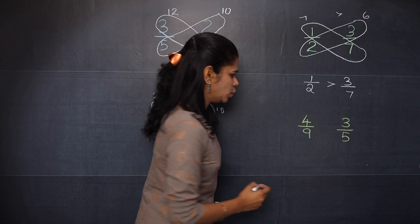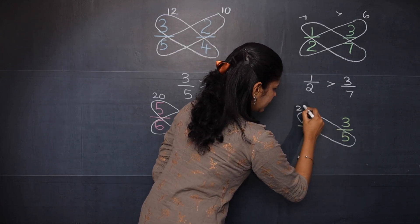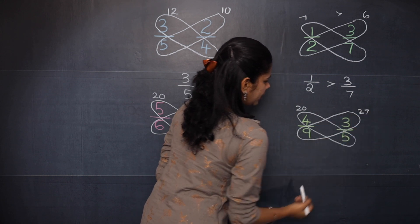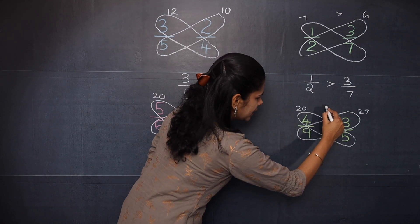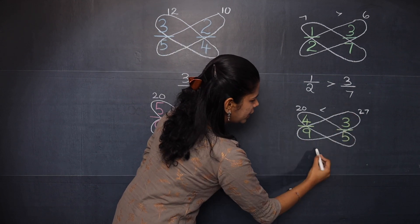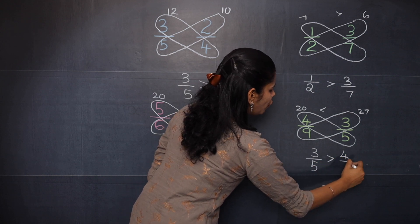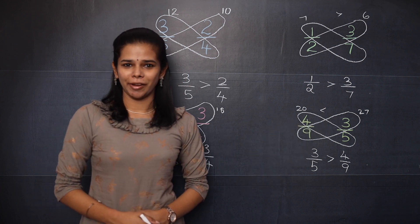Moving on to the last one. Here 5 into 4 is 20 and 3 into 9 is 27. So 27 is greater than 20, which means 3 by 5 is greater than 4 by 9. Or you can write 4 by 9 is less than 3 by 5.